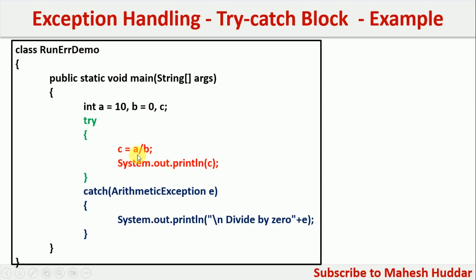Let us assume that the value of a and b are 10 and 0 respectively. So 10 divided by 0 is not allowed — it will generate an arithmetic exception and the associated catch block will be searched. We have an associated catch block, so it will execute the statements under that catch block. If the value of b is not equal to 0 — say it is 2 — then c is equal to 10 divided by 2, which is 5, and 5 will be printed. In that case, the catch statements will not be executed because there is no exception.